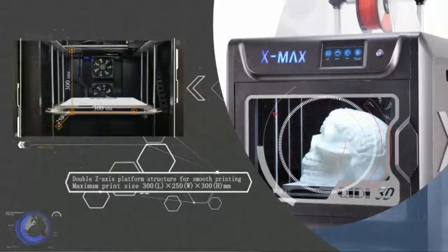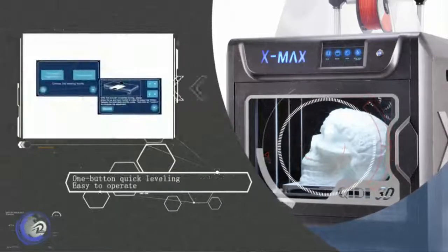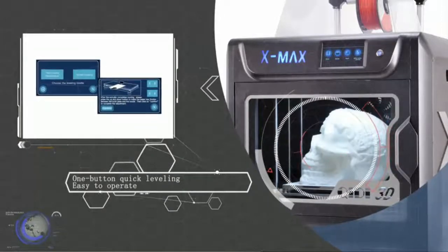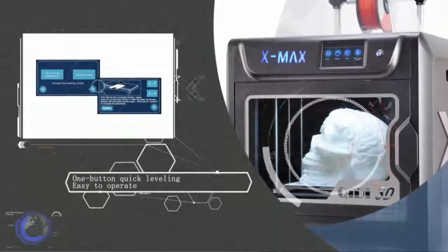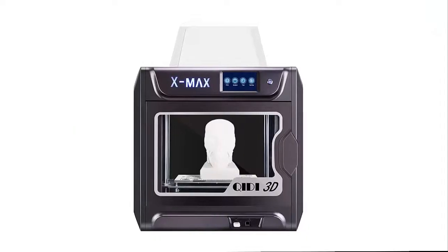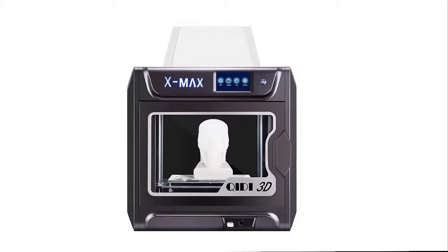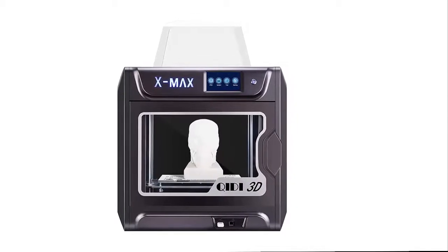Two sets of extrusion systems. XMAX is equipped with two sets of extruders for different filaments. Extruder A is suitable for printing filaments such as PLA, ABS, PETG, TPU, etc. The maximum temp is 240.